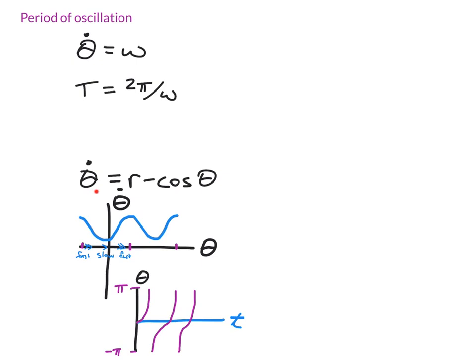Now let's look at a slightly different example, theta dot equals r minus cosine theta. This is an example where oscillation is going to be turned off for some values of r, but on for other values of r. I'd specifically like us to think about the period of oscillation when we're relatively close to the bifurcation where oscillation is going to turn off.